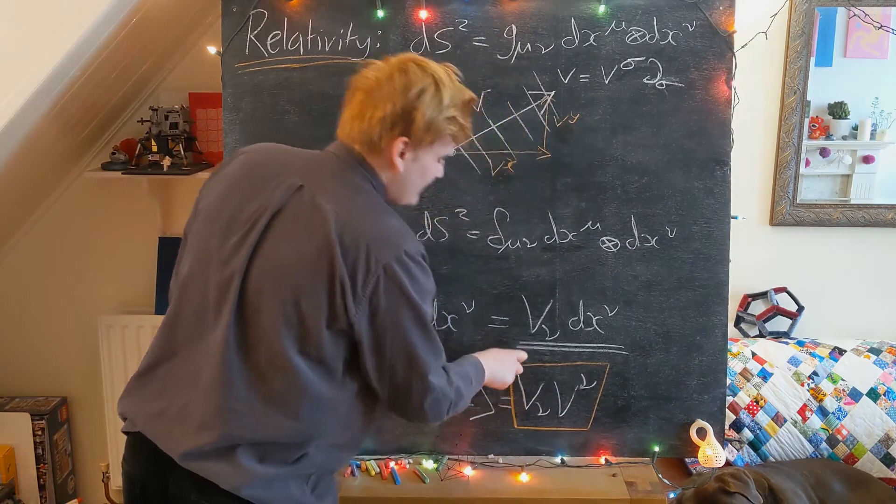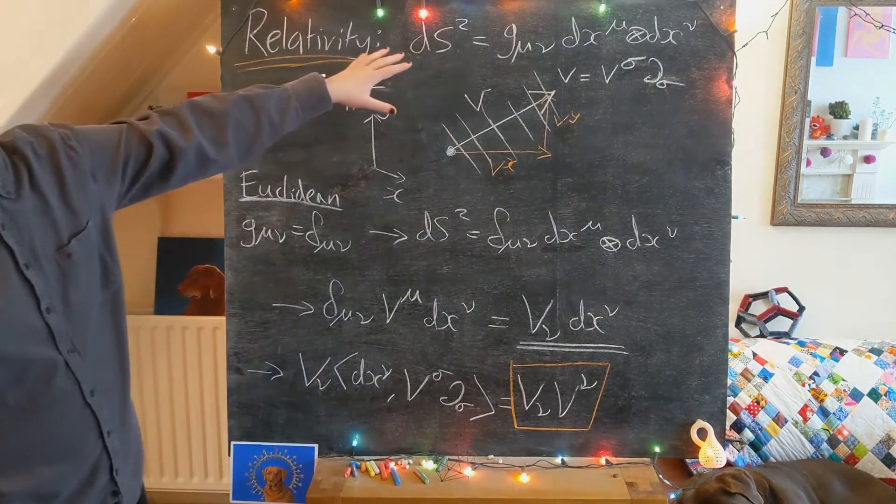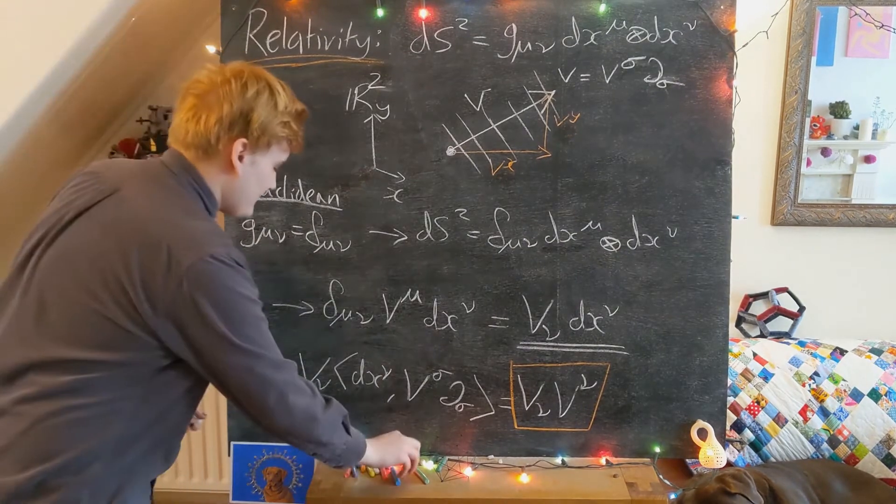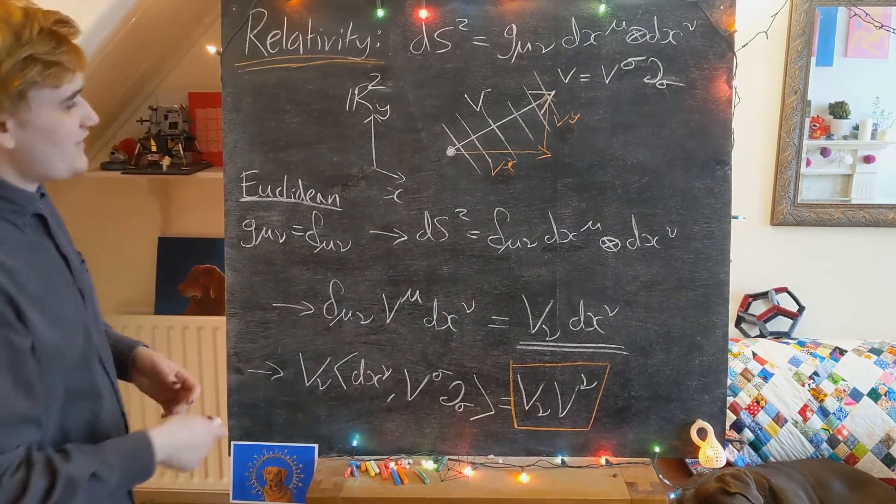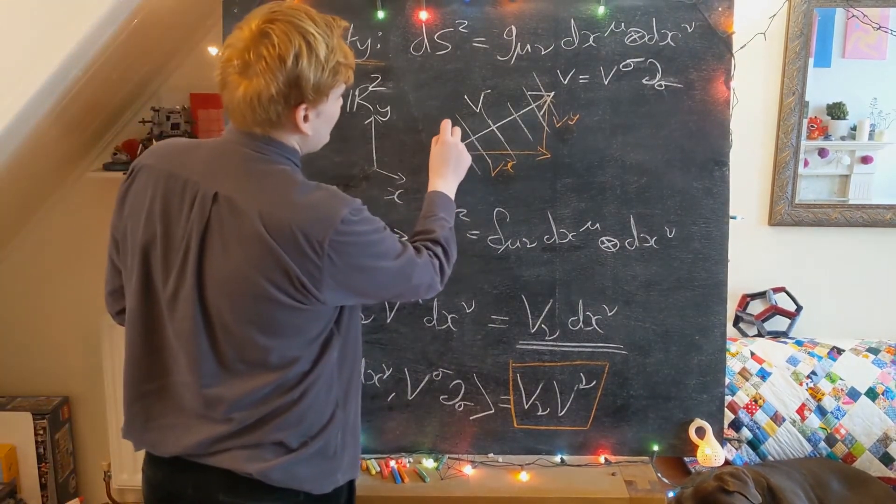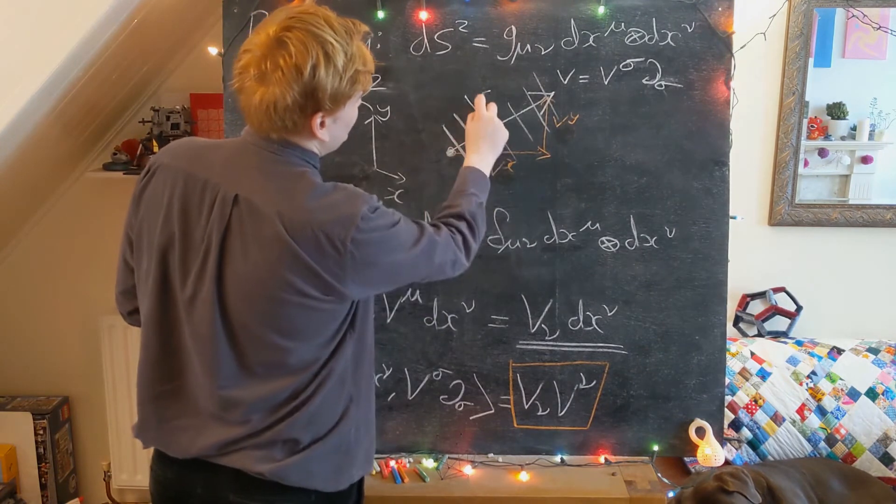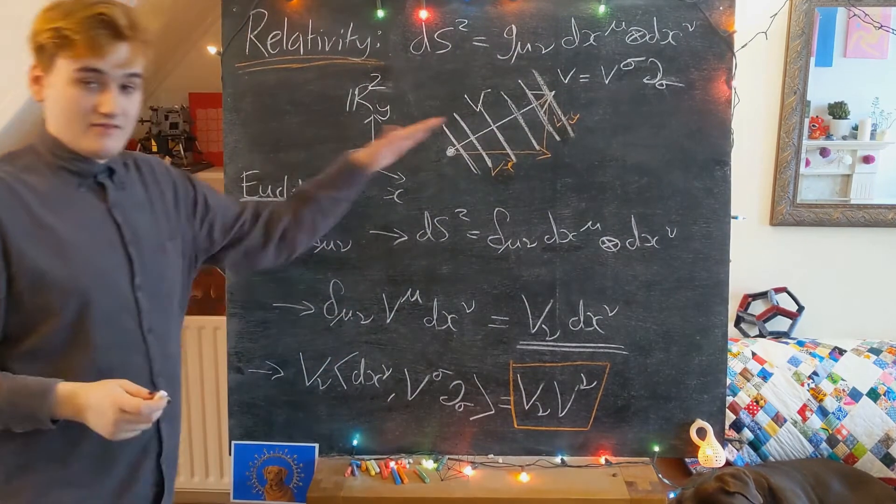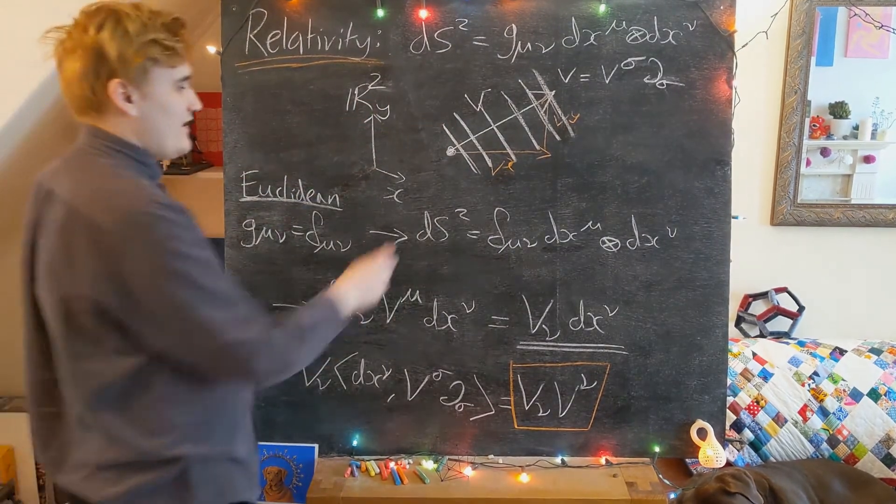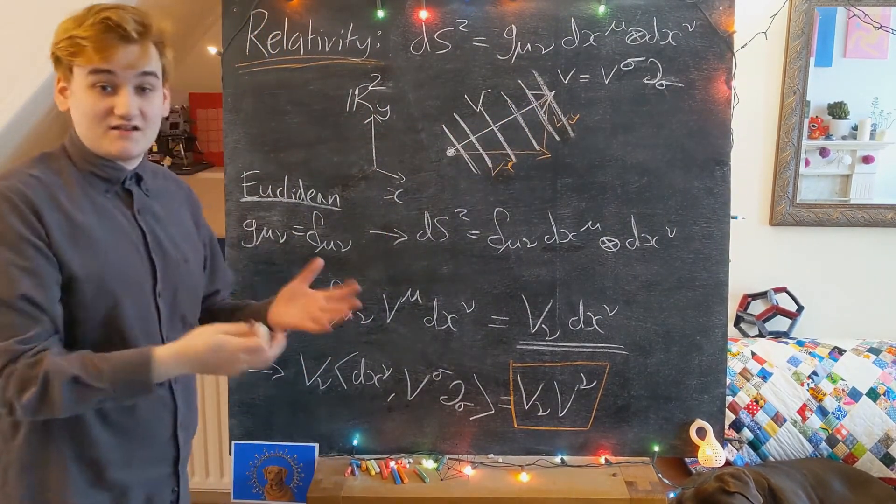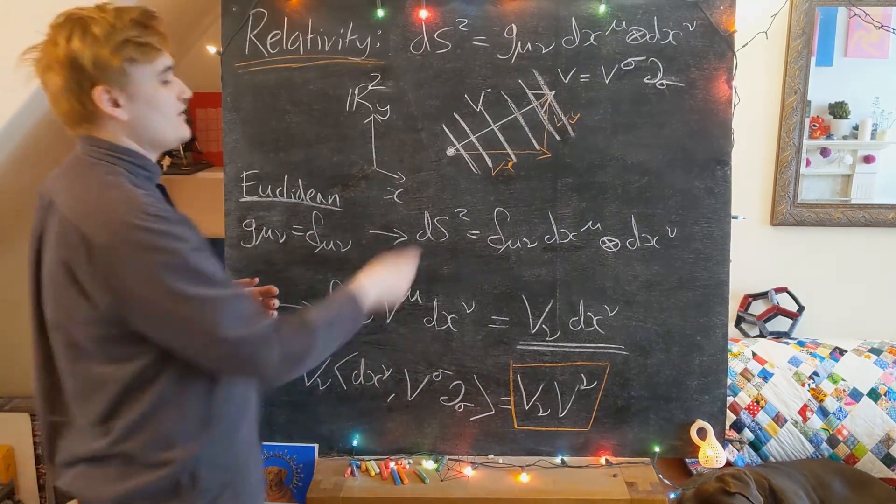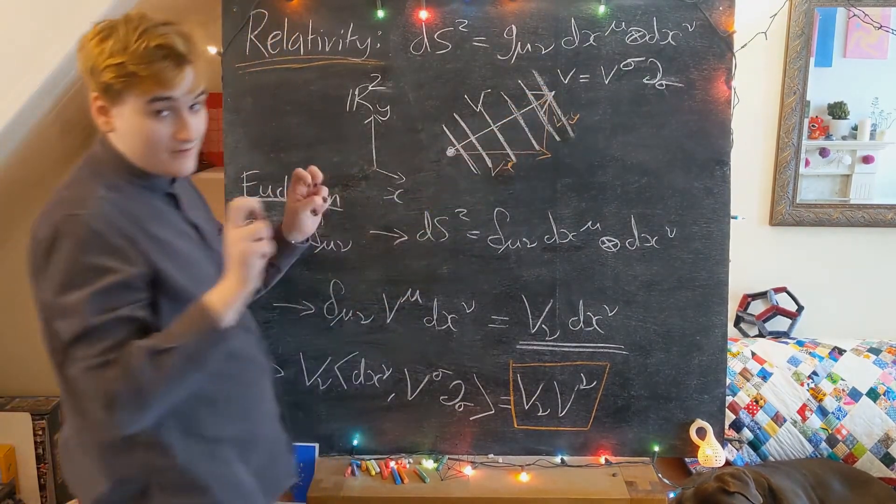And we saw pictorially what that's going to do - it's essentially just going to count how many of these one-form surfaces were pierced by that vector. And now just doing this counting is just going to give us a real number, and we interpret that real number as the length of this vector.